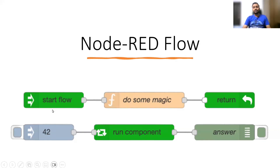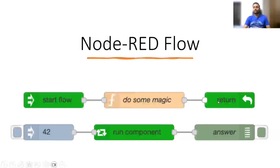For a simple flow example: on the left we have an input node, in the middle we have a function node for processing, and on the right side we have an output node. When you start the flow, it connects and does the processing, then passes results to the output. For example, we have 42 as an input, a middle component takes it, applies some processing, and calculates whatever output comes out. This is how simple Node-RED can be.